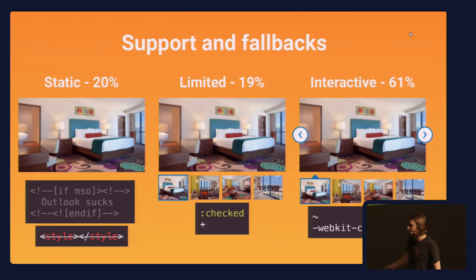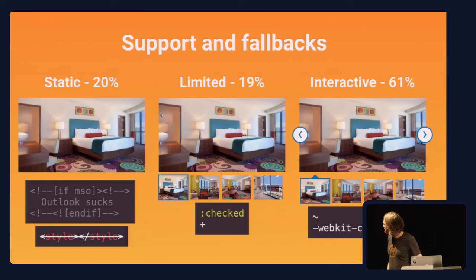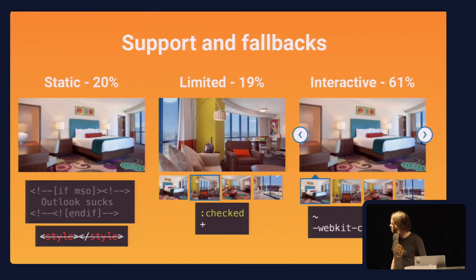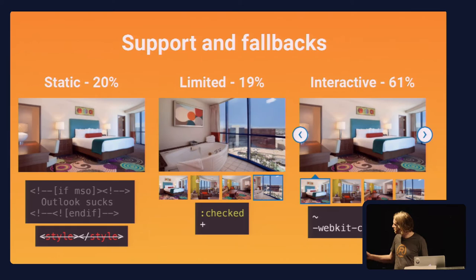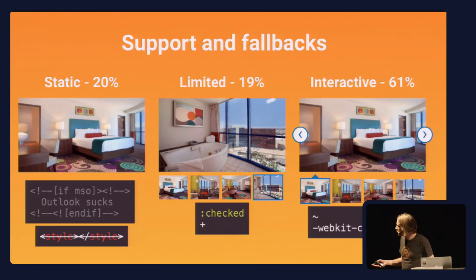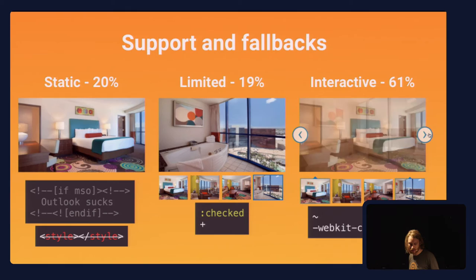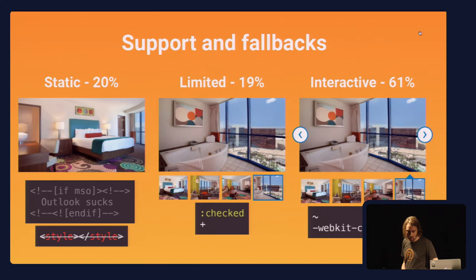For limited clients we need to detect checked in the CSS and the sibling selector. For interactive we can do the cool stuff — anything WebKit-based. Let me give you a quick demo. In the static version it just doesn't do anything. In the limited version you've got a gallery — you can jump around the hotel room images. It's a bit jumpy, just changing the image. If you want to add a little finesse, in the interactive version you get a nice little fade between the images, plus arrows for continuous scrolling.